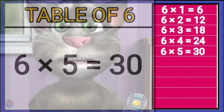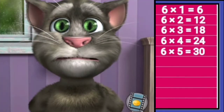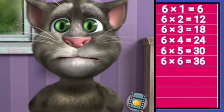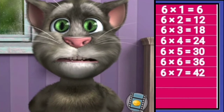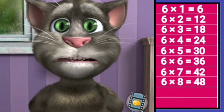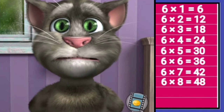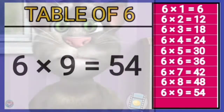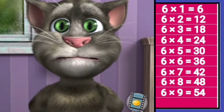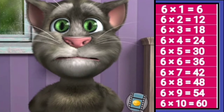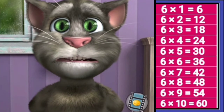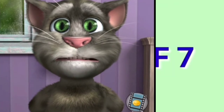Table of six. Six sixes is thirty-six, six sevens is forty-two, six eights is forty-eight, six nines is fifty-four, six tens is sixty.